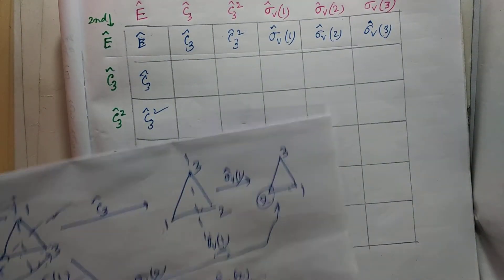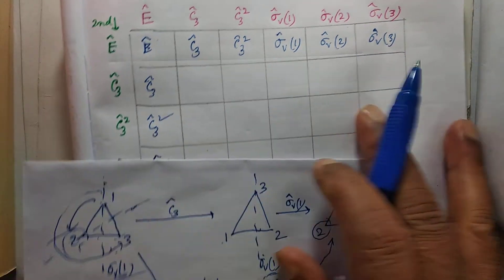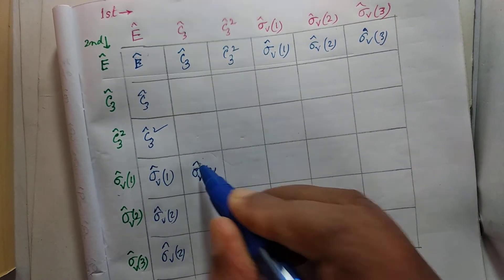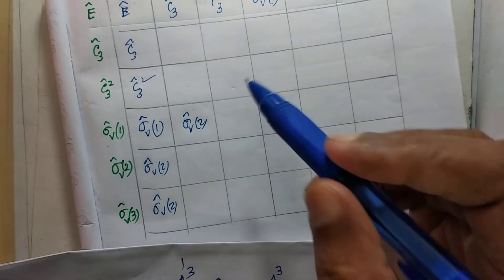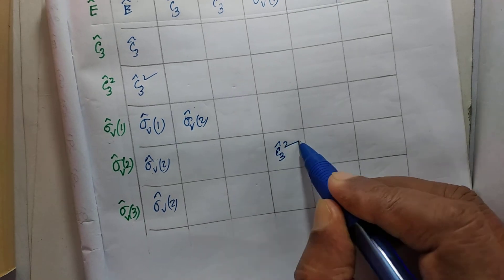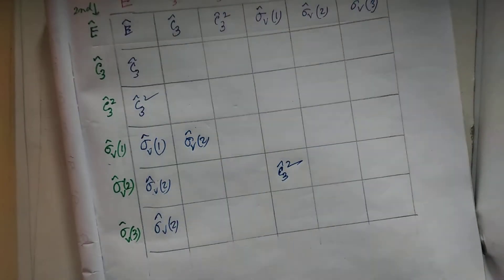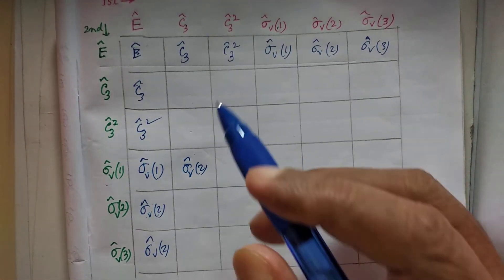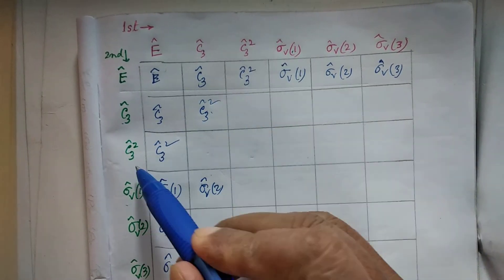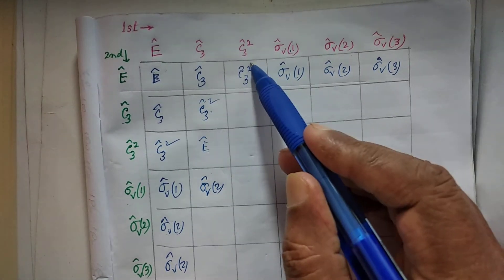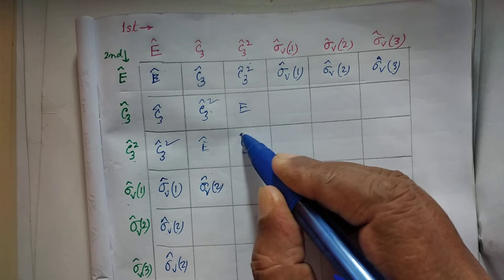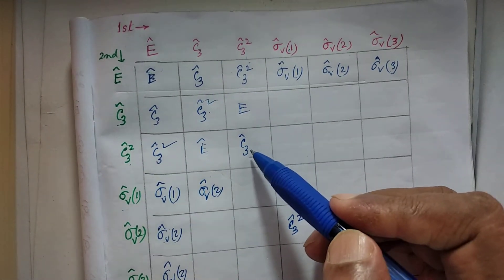We write the results: C3 followed by σV1 equals σV2, and σV1 followed by σV2 equals C3². For the C3 block: C3 followed by C3 gives C3²; C3 followed by C3² gives identity; C3² followed by C3 gives identity; and C3² followed by C3² means C3 four times, which is equivalent to C3 once, because C3 three times gives identity. So this part of the table is complete.